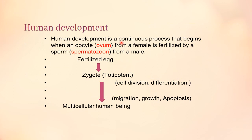Human development is not a single process; it is a continuous process that begins with fertilization and continues after birth. When an oocyte, or female germ cell, is fertilized by a male germ cell — a sperm — it forms a fertilized egg called the zygote, which is a totipotent cell capable of cell division and differentiation. Through cell division, differentiation, migration, growth, and programmed cell death, this zygote is transformed into a multicellular human being.